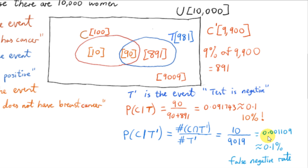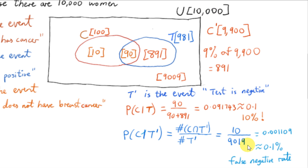If we want the average number of women who are told they don't have breast cancer when they actually do, we multiply 0.001 by 10,000, and on average we get approximately 10.